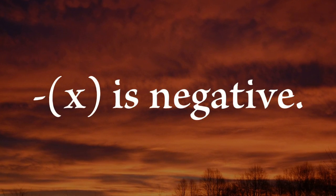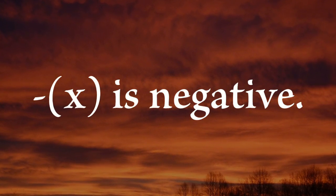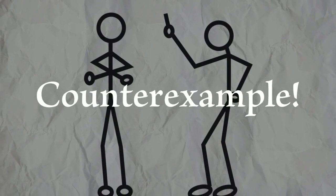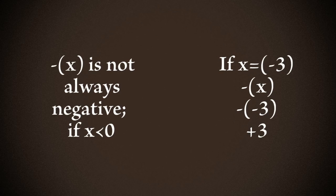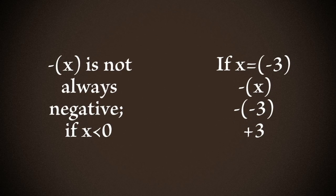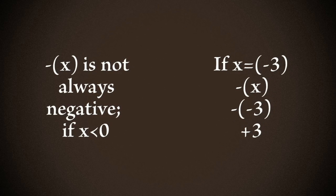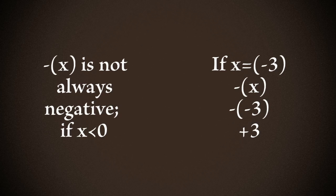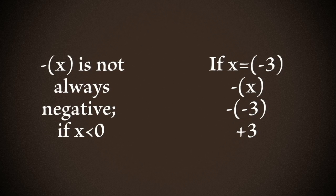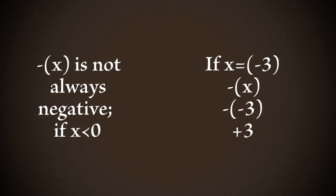Do you know the value of X? Since the value of X can be any number, it could be less than zero, which would be the appropriate counterexample. The opposite of a number is not always negative — the opposite of a negative number results in a positive.